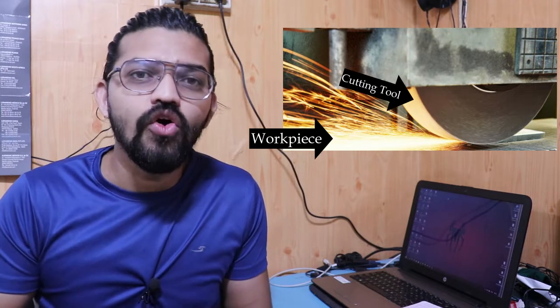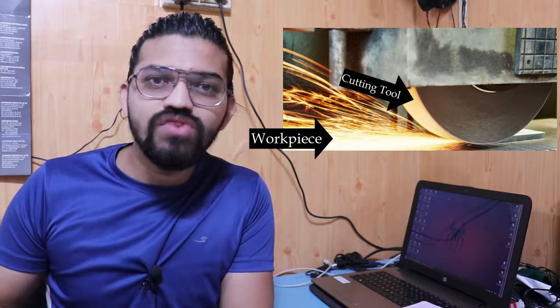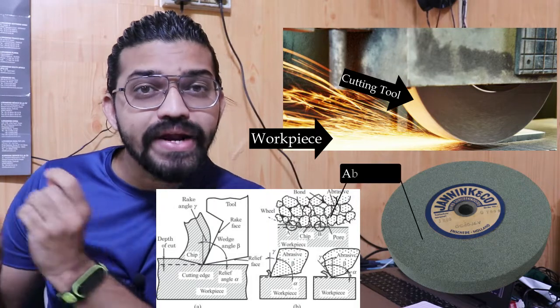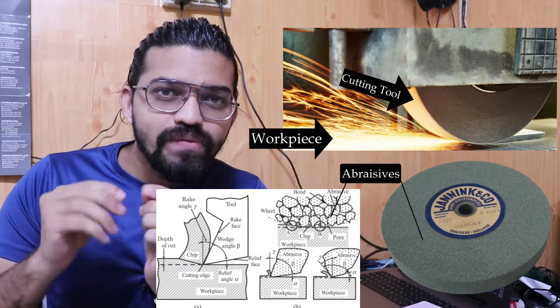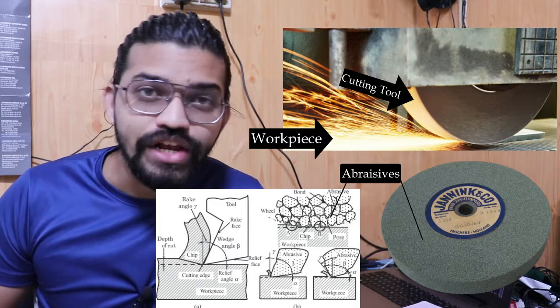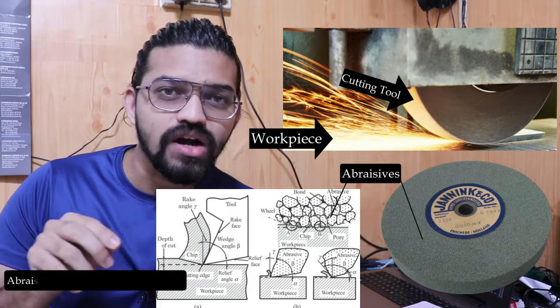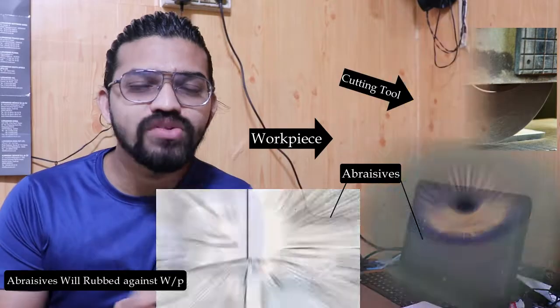In the grinding process, the workpiece is pressed against a rotating cutting tool. Looking at the nomenclature of this cutting tool, it contains many small abrasives fused and bonded together, producing a series of abrasives around the periphery of the wheel. When the wheel rotates, these abrasives rub against the workpiece and a very little amount of material gets removed — this is the actual mechanism of the grinding process.